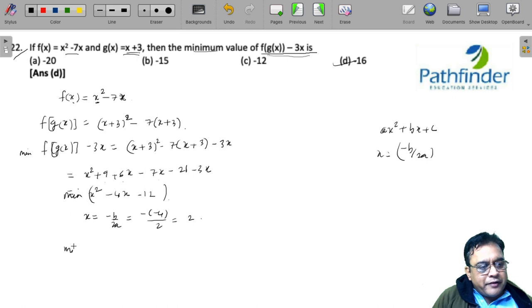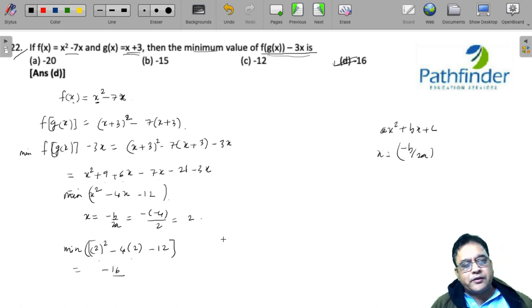So putting the value of x as 2, you get 2² - 4(2) - 12. So 4 - 8 - 12 will give you minus 16 as the simple answer. You could have also differentiated this and calculated the minima if you know differential calculus. But this is equally simple.